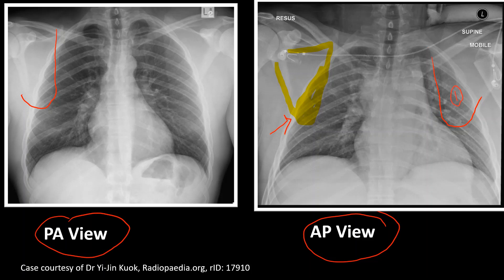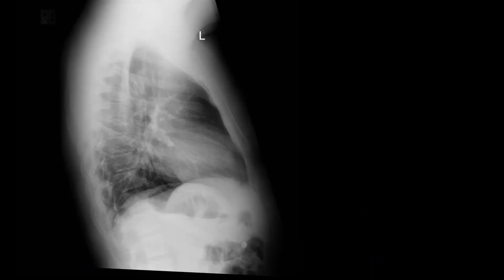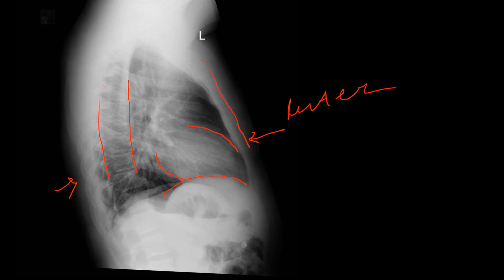Because of the antero-posterior view, the upper part of the mediastinum looks broader and the size of the heart looks larger. That is why we should identify whether the x-ray is taken in antero-posterior or posterior-anterior view. In the lateral view, we can see the anterior side, posterior side, sternum, border of the heart, vertebral column, and diaphragm. Lateral views are generally taken to identify the position of foreign bodies, infiltration, or space-occupying lesions.